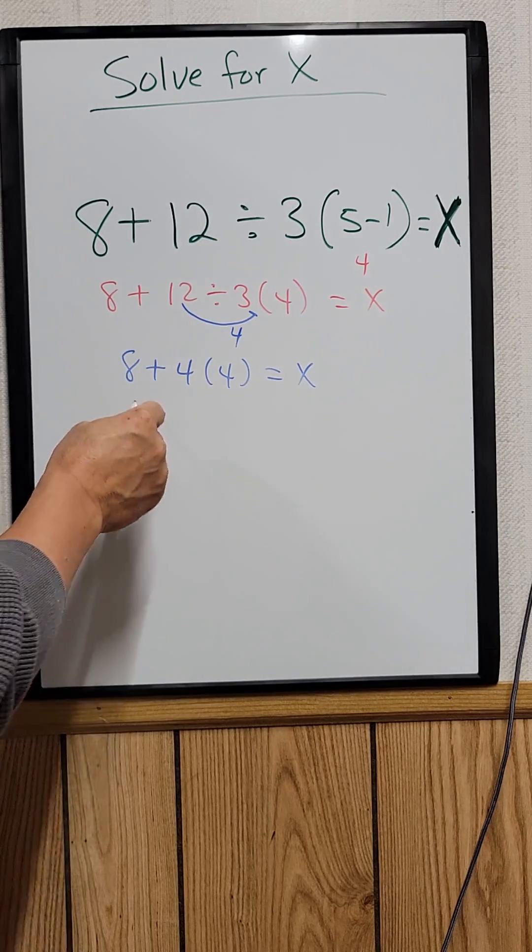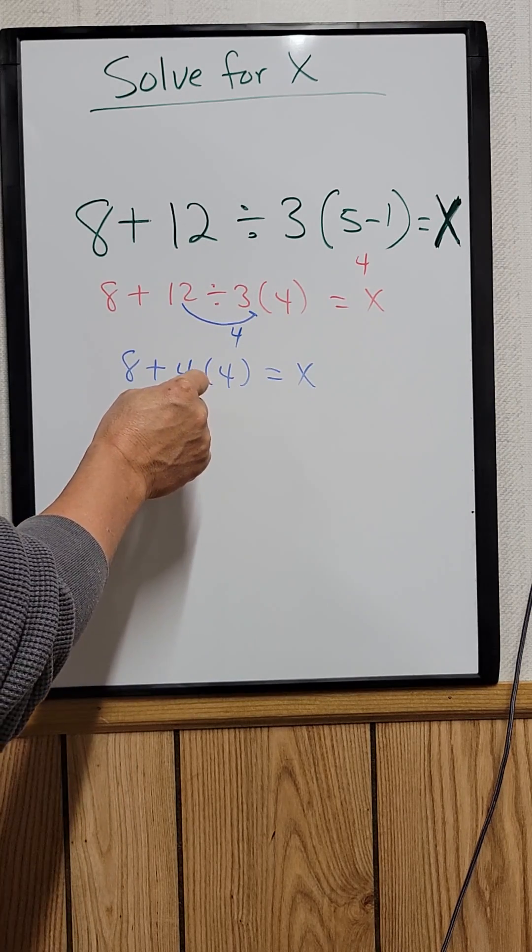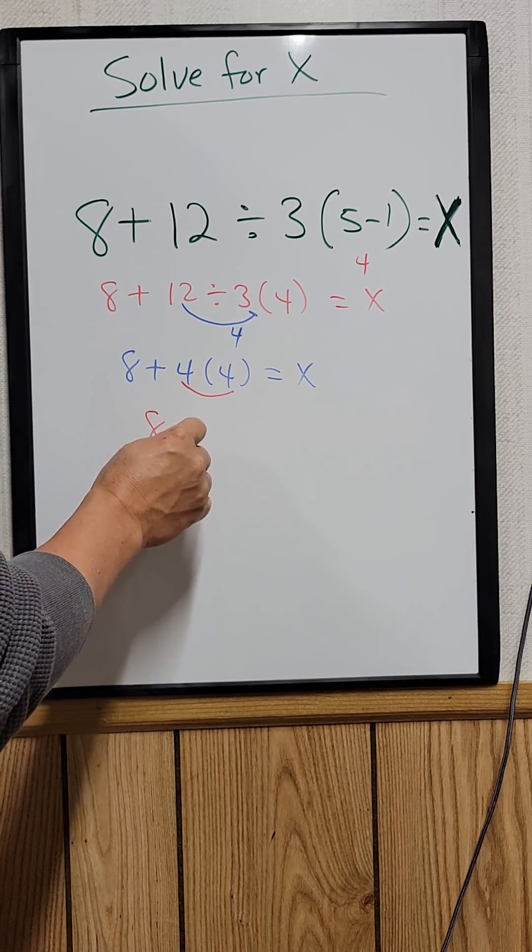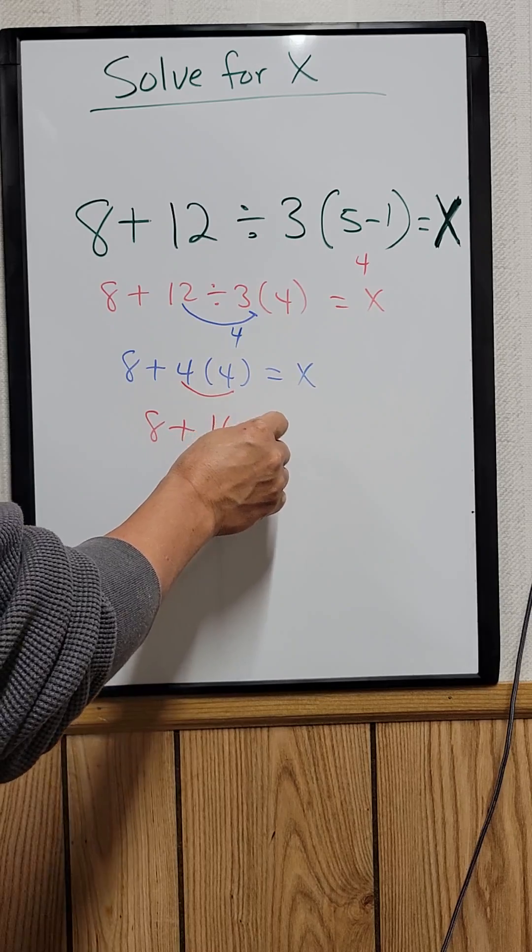And the next thing you need to do is the multiplication. So 4 times 4 is equal to 16. So 8 plus 16 equal to x.